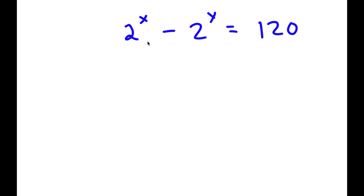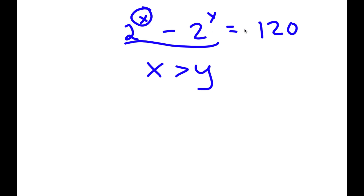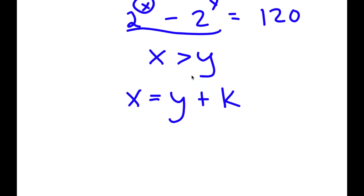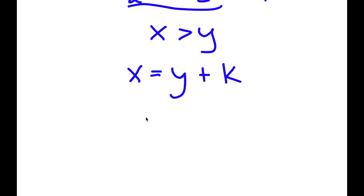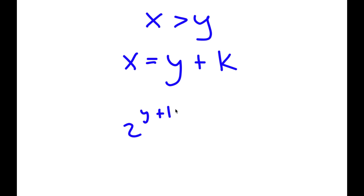In this problem I have 2 to the power of x minus 2 to the power of y is equal to 120. Looking at this, x is going to be greater than y, because if x were less than y, the result would be a negative number. Since x is greater than y, x is going to equal y plus some constant k. So if I replace x with y plus k, I get 2 to the power of y plus k minus 2 to the power of y is equal to 120.